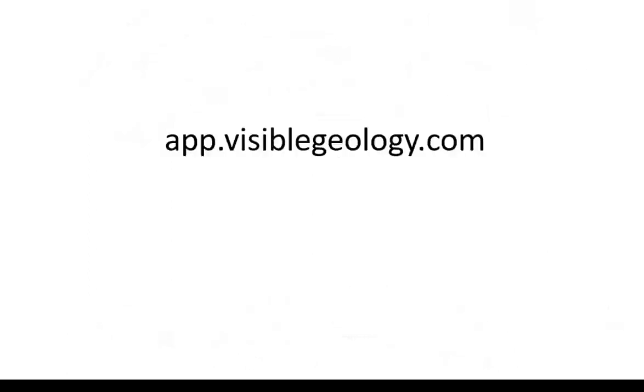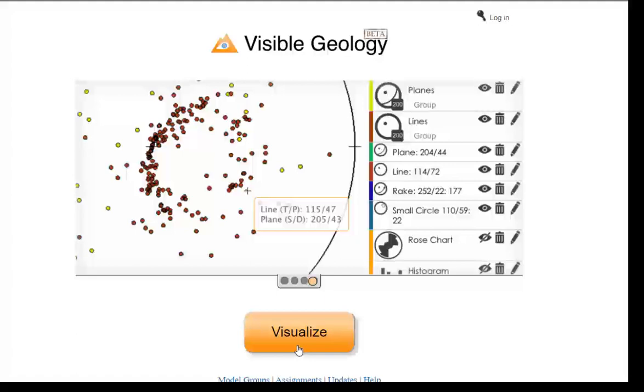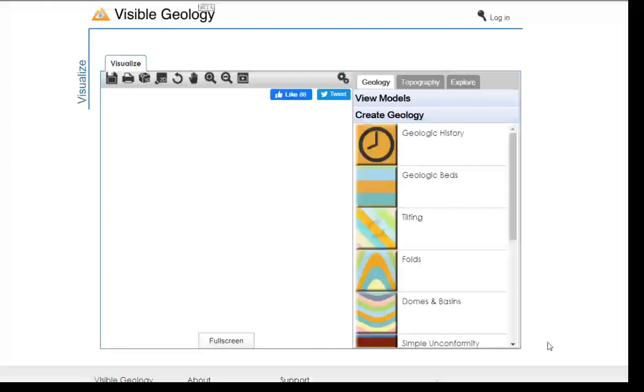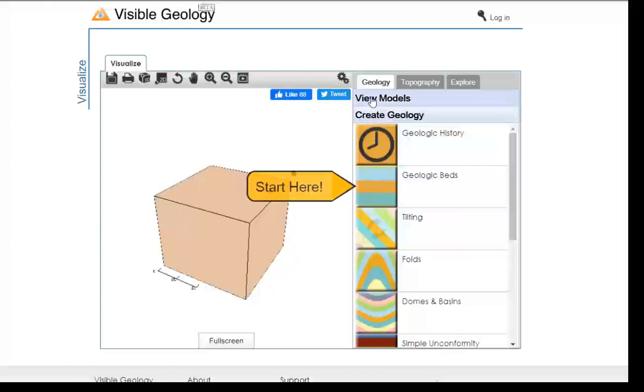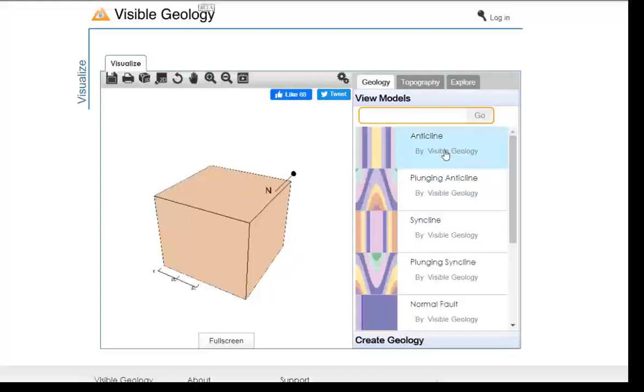Now to relate this cross-section view, which is actually the easy part, to a geologic map, I like to use Visible Geology. You can google Visible Geology or type in the URL shown here and go to this site. When you get there, you can click visualize. The great thing about Visible Geology is it shows you different features in a block diagram that allows you to relate the cross-section view to what you would see on a map or surface view. I'm gonna go to view models where they've already created a model of an anticline.